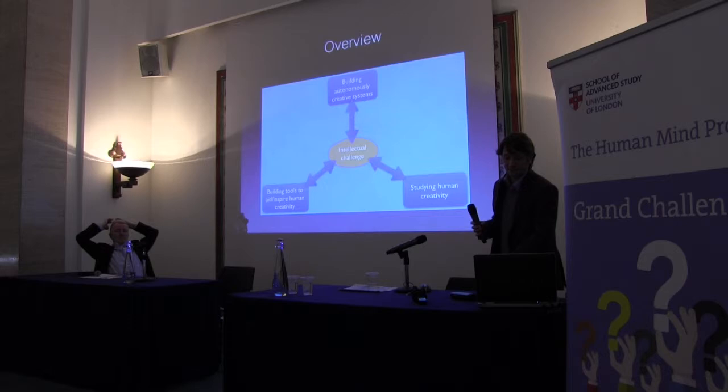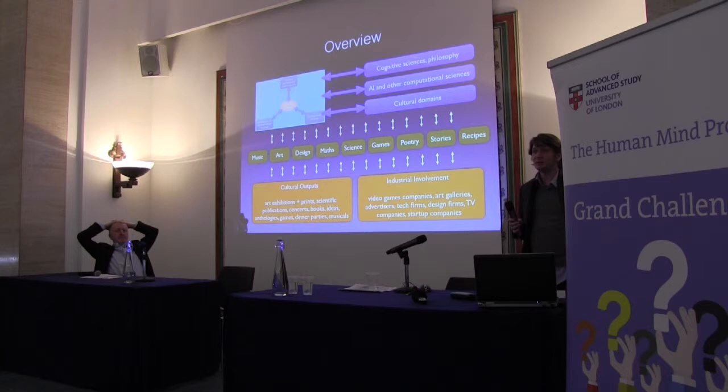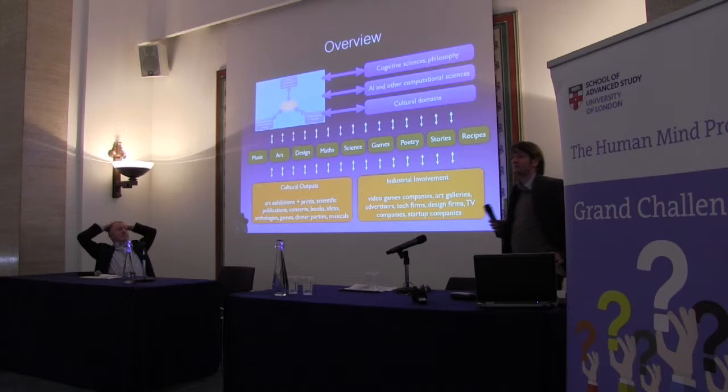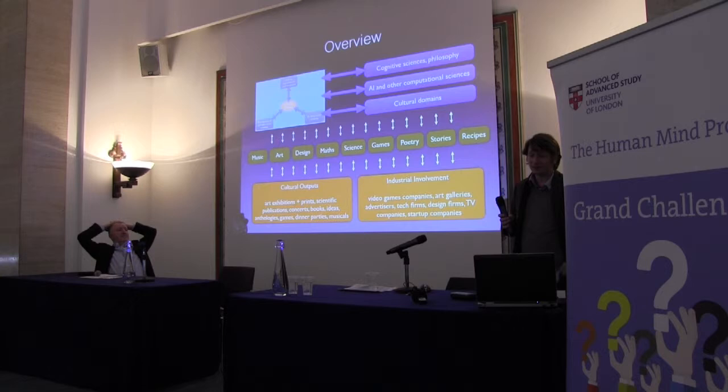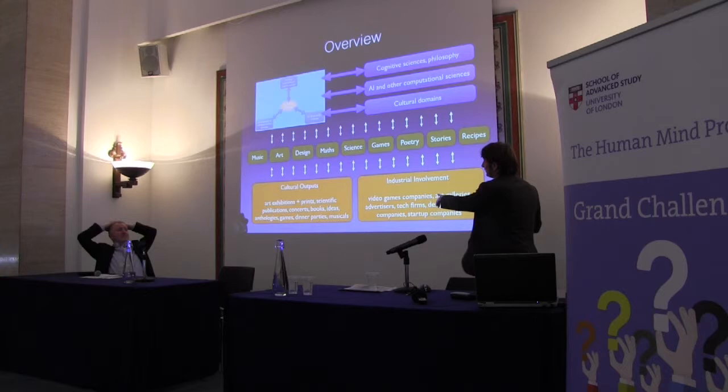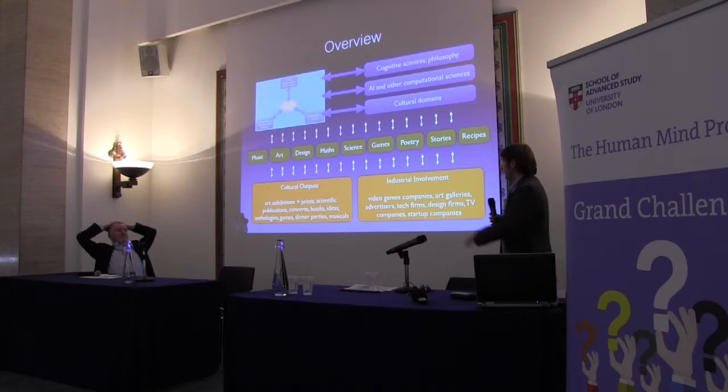We interact with cognitive sciences and philosophy, artificial intelligence and other computational sciences. We also overlap with cultural domains: music, art, design, maths, science, games, stories, and recently recipes. There's software out there which will make recipes — we've had dinner parties, but nobody died. We try to put on art exhibitions, print scientific publications of software-generated science, and recently put on dinner parties and musicals. And we're beginning to break into the creative industries — advertising is particularly interesting in our field now.